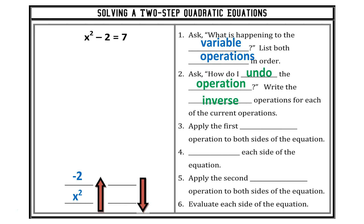So I had x squared, then I subtracted two. I'm going to start at the top: add two and then take the square root of both sides. The arrow moving up describes the operations as they exist in the equation according to the order of operations. The arrow pointing down describes the inverse operations in the inverse order. I see that my equation has x squared minus two. Squared comes first because exponents come before addition and subtraction. So instead of subtracting two, I need to add two to both sides. Then, instead of squaring, I need to square root both sides.